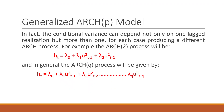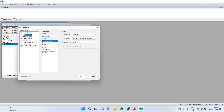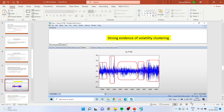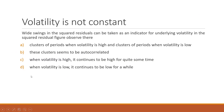Now let us carry out this analysis in EViews. I have a series called 'returns.' I will click on View, then Graph, and click OK. You can see that this returns series exhibits volatility clustering. There is strong evidence of volatility clustering happening, meaning the volatility is not constant over the time period. Wide swings in the squared residuals can be taken as an indicator of underlying volatility. Clusters of periods when volatility is high and clusters when it is low can be seen in the graph. These clusters appear to be autocorrelated — when volatility is high it continues to be high, and when it is low it continues to be low.